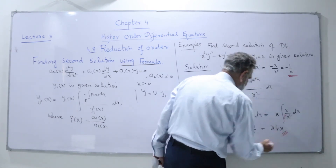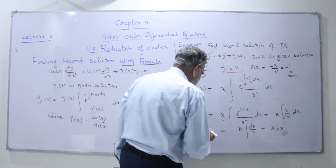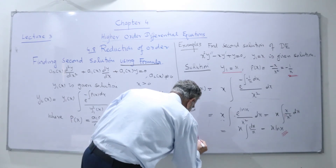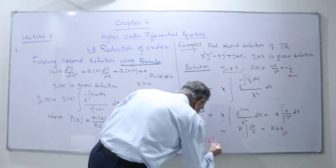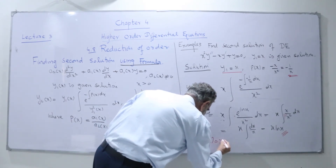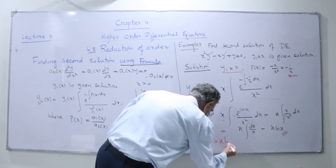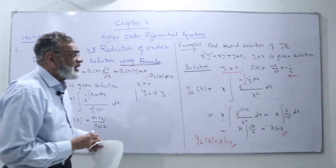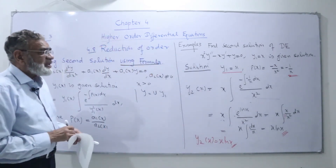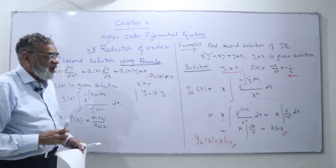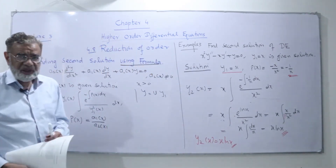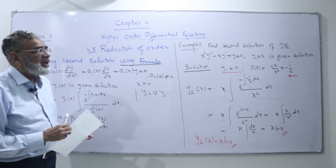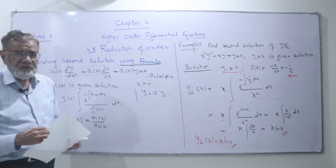So my y2 of x is equal to x·ln(x). You can see how simple it is to find the second solution by using the formula. I'll give you some more examples where I will use the formula to get the second solution.